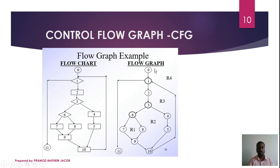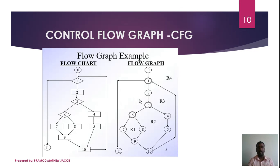In this program's control flow graph, we have 12 nodes (0 through 11) and 14 edges. The starting state is node 0 and the final state is node 11. From this we can derive the set of independent paths.